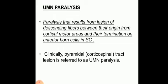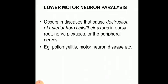Clinically, corticospinal tract lesions are referred to as upper motor neuron paralysis. So if you get a 10-marker on the corticospinal tract, you need to make mention of what upper motor neuron paralysis is and what are the features of UMN paralysis. Before we go deep into UMN paralysis, I would like to define lower motor neuron paralysis.